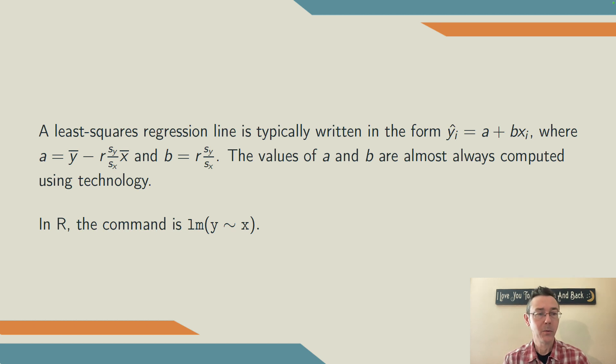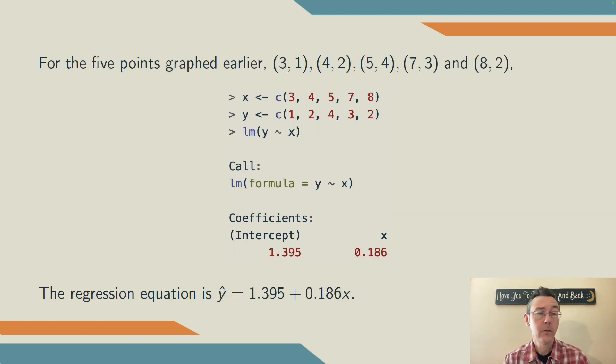For instance, using the points from that scatterplot a few slides ago, (3,1), (4,2), etc., I'm going to get the equation of the regression line first by coding in the x values and the y values in the same order, and then using the lm command.